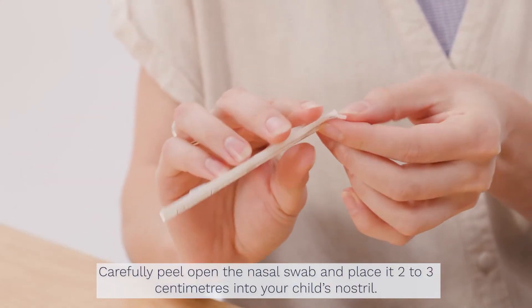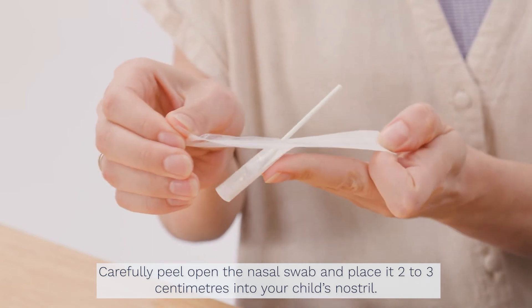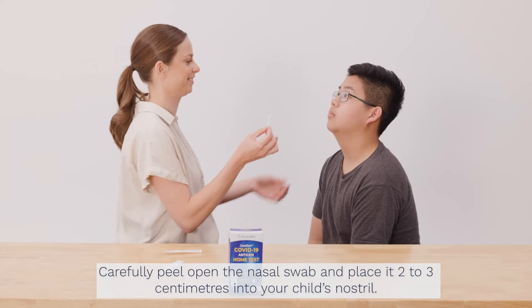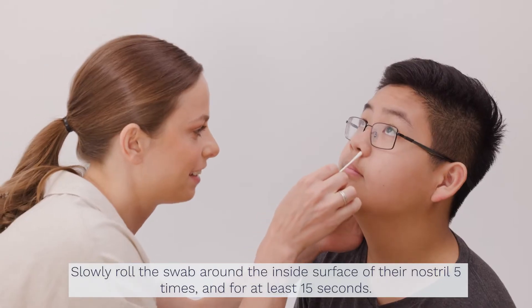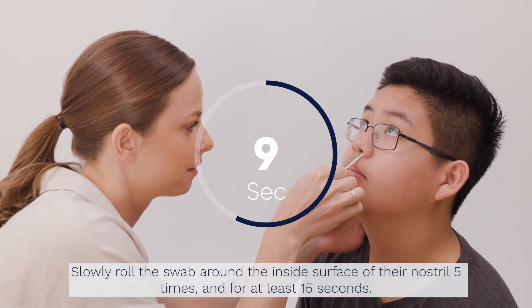Carefully peel open the nasal swab and place it 2 to 3 centimeters into your child's nostril. Slowly roll the swab around the inside surface of their nostril 5 times, for at least 15 seconds.